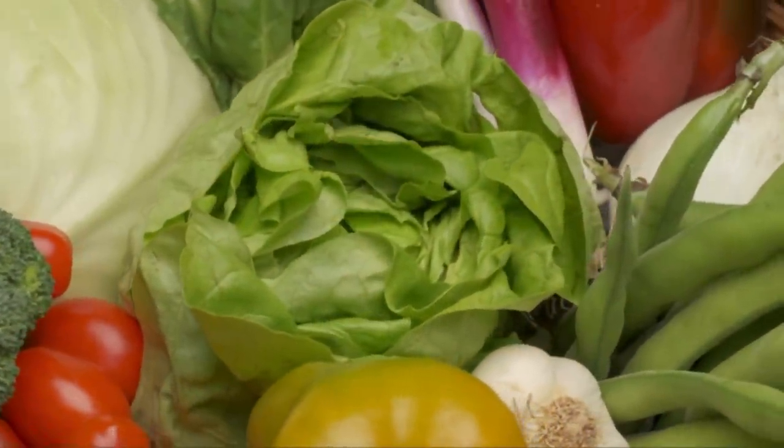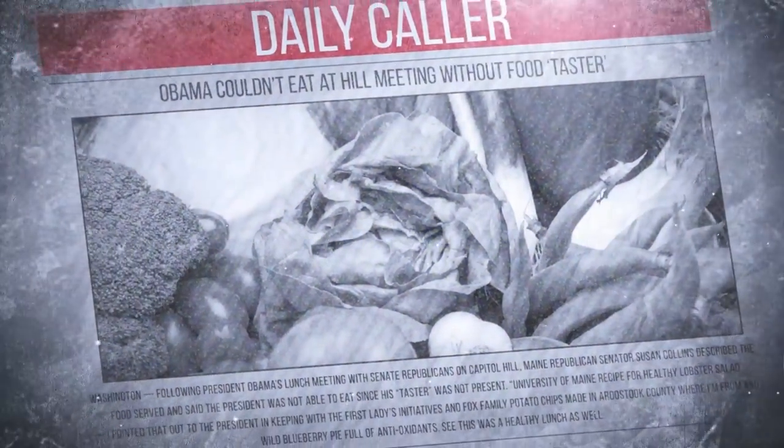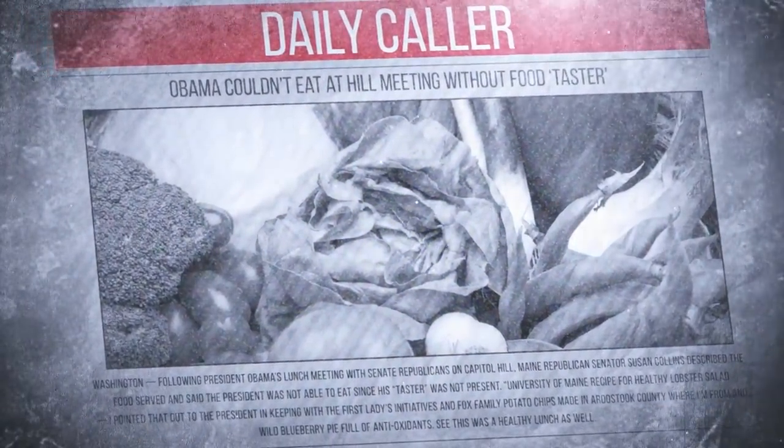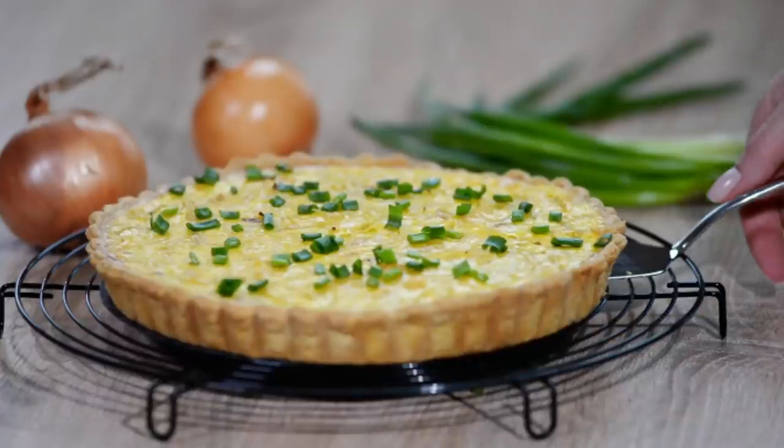A more recent example of a food tester circulated when in 2013 one report claimed that President Obama refused to eat lunch with Senate Republicans on Capitol Hill because his taster wasn't present. The U.S. Secret Service has always refused to confirm if presidents travel with a taster or not, but this report sure makes it seem that way.